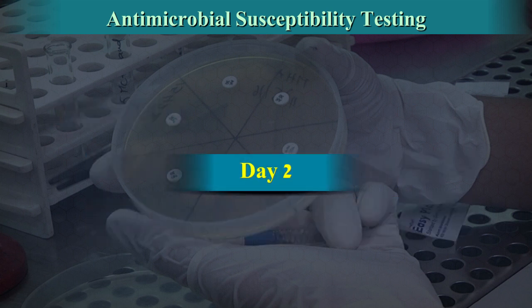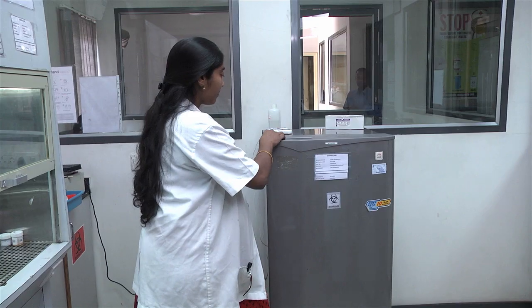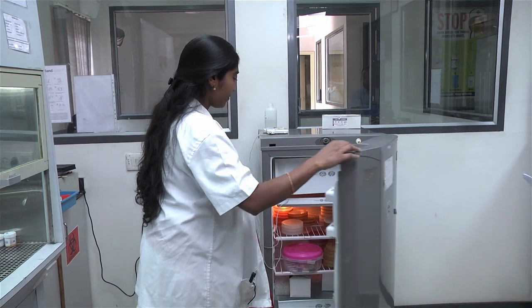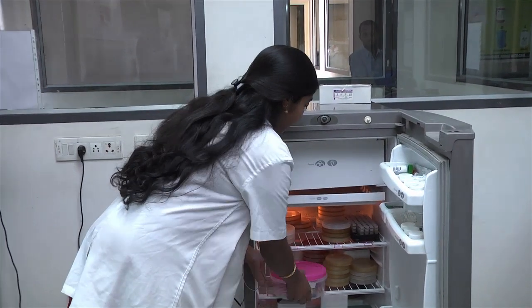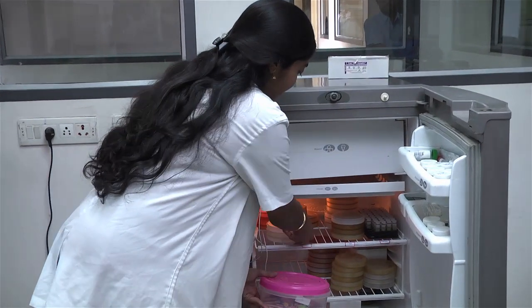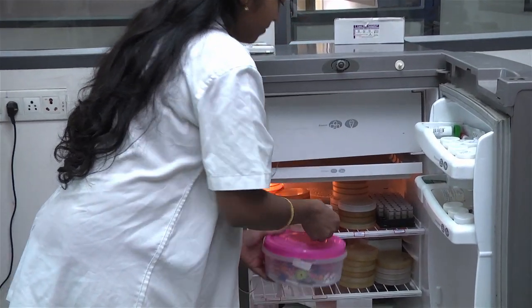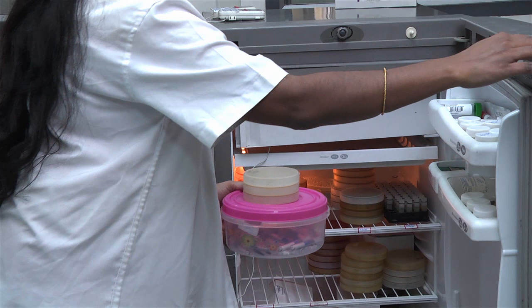Day 2: Remove the antimicrobial discs and the Mueller-Hinton plates from the refrigerator and keep them outside for 20 to 30 minutes until they reach room temperature.